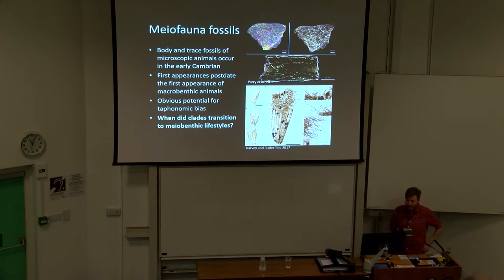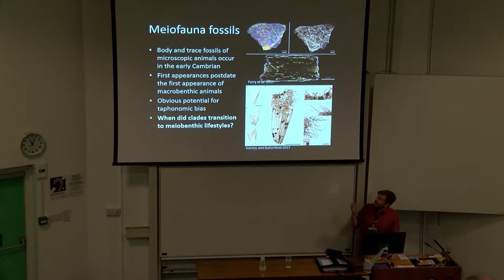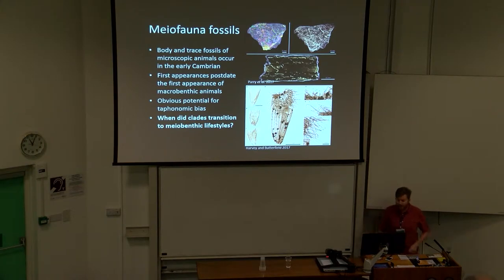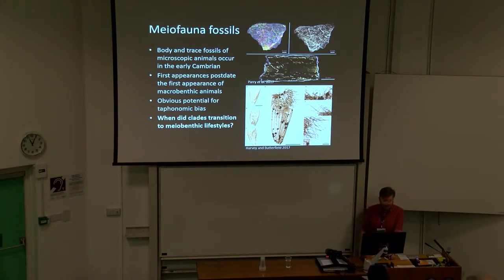We do have some record of meiofauna in the form of trace fossils. These are some meiofaunal trace fossils that I worked on from Brazil and described last year, and at the bottom here is a fantastic fossil of a meiofaunal loriciferan, also from the early Cambrian. Although these tell us that meiofaunal animals were definitely around in the early Cambrian, they often post-date the first appearance of macrobenthic animals, and there's obvious potential for a telescoped record of meiofaunal animals because they're so difficult to preserve.